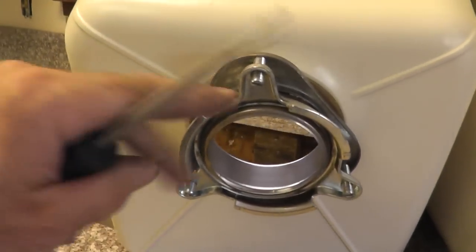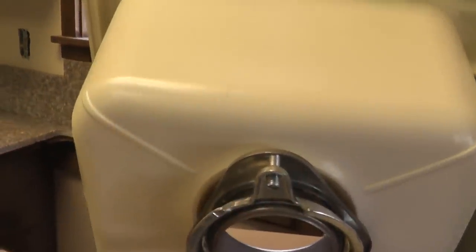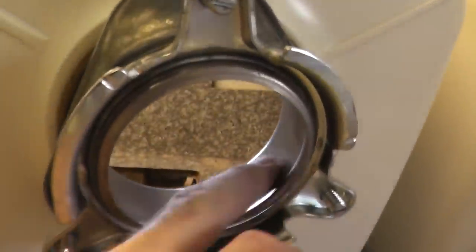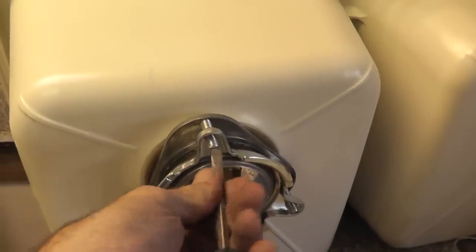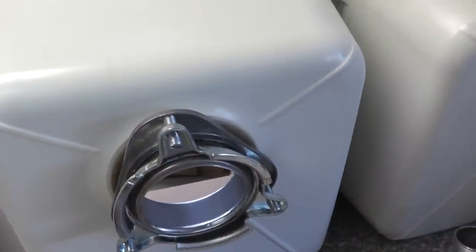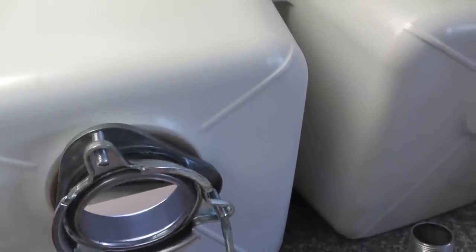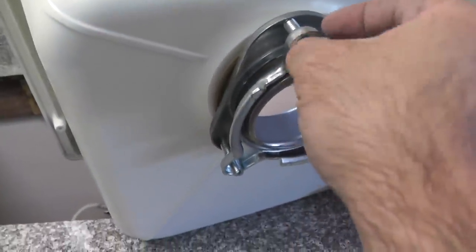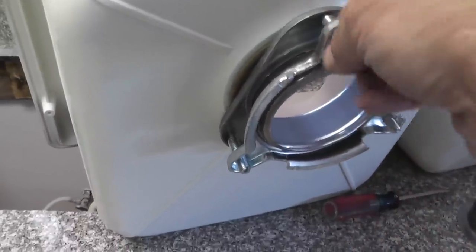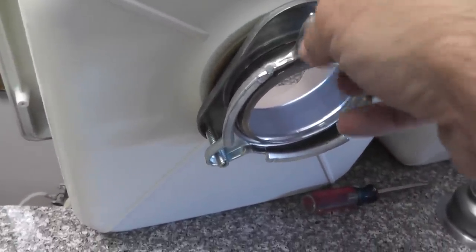To remove one of these, you need to first loosen these three screws. What these screws do is they pull this inner cylinder down so that it's tight against the bottom of the sink so it makes a nice strong seal. So we'll loosen these and they don't need to come all the way out.